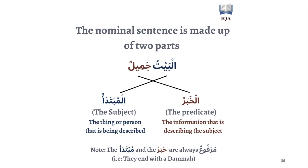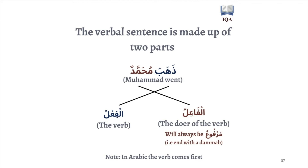The verbal sentence is likewise made up of two parts. When I say ذَهَبَ مُحَمَّدٌ, which means 'Muhammad went', we need to note that in Arabic the verb comes first. So 'Muhammad went' in Arabic is literally 'went Muhammad', because ذَهَبَ is the verb while Muhammad is the one doing the action. In Arabic the verb comes first — ذَهَبَ — then the doer — Muhammad — unlike in English. A verbal sentence is always made up of two parts: the fi'l — ذَهَبَ, the verb — and the fa'il — Muhammad, the doer of the action. The fa'il will always be marfu', always ending with al-damma. It would be wrong to say ذَهَبَ مُحَمَّدٍ or ذَهَبَ مُحَمَّدًا — it must be ذَهَبَ مُحَمَّدٌ.